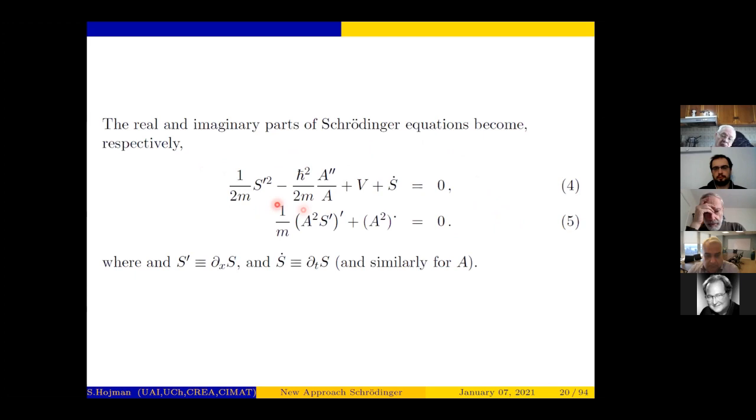What you have is a modified version of the classical Hamilton-Jacobi equation for the potential V plus a term which is essentially the second derivative, or in the multi-dimensional case the Laplacian, of the amplitude over the amplitude. The second equation, which may look unfamiliar, is just the continuity or the probability conservation equation. So the second equation means that probability is conserved, and the first equation is a modification of the classical Hamilton-Jacobi equation.